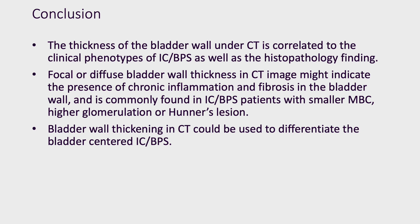In conclusion, this study revealed that bladder wall thickening under CT imaging is correlated to the clinical phenotypes of IC/BPS as well as histopathological findings. Focal or diffuse bladder wall thickening on CT imaging may indicate the presence of chronic inflammation and fibrosis in the bladder wall, and is commonly found in IC/BPS patients with smaller MBC, higher grades of glomerulation, and the presence of Hunner's lesions. As a result, bladder wall thickening on CT imaging could be used to differentiate bladder-centered IC/BPS patients.